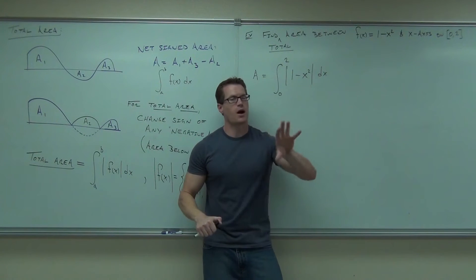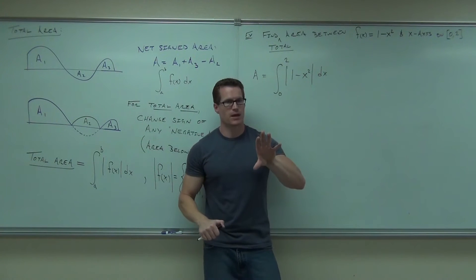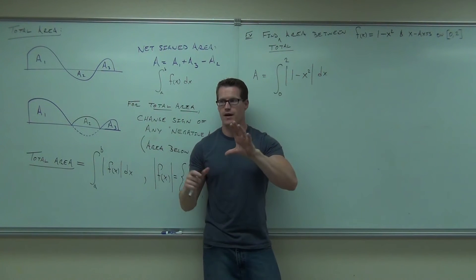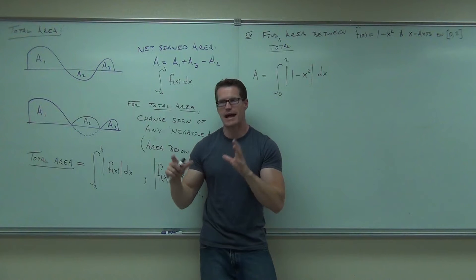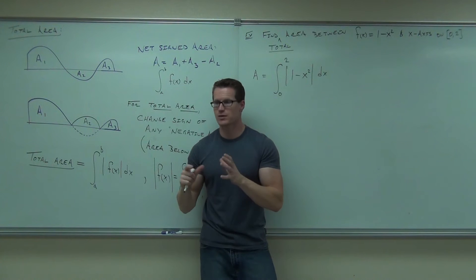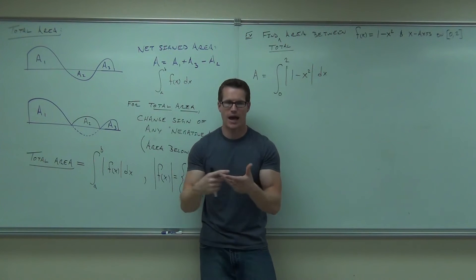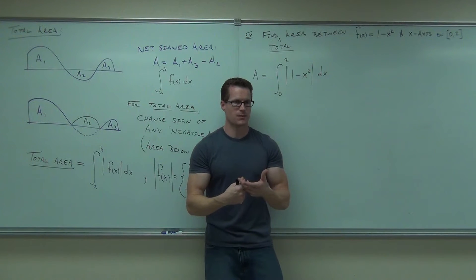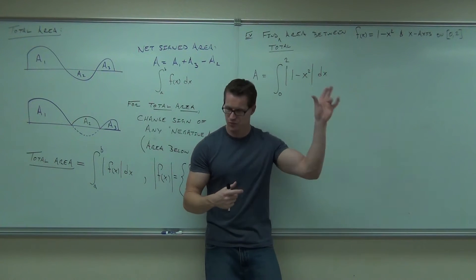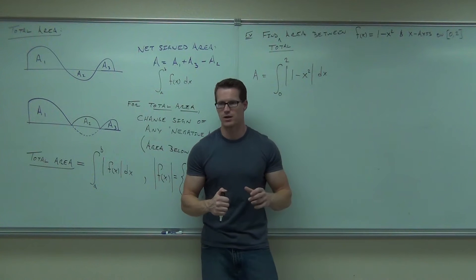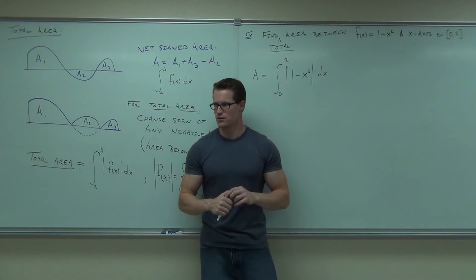That would count as positive area. To find the area between them, take all of it and add it all together. No matter what the sign is, add it together, because the absolute value will change it to a positive. You following that?